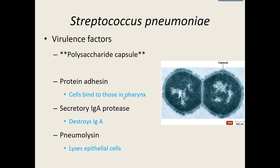Its biggest virulence factor is that it has a capsule, and it likes to hang out in pairs. A couple other virulence factors: it has an adhesion protein that allows it to stick to the epithelial cells in our pharynx. It also makes its own enzyme called secretory IgA protease that breaks down our immunoglobulin A antibodies — so when our immune system tries to attack it, this bacteria produces an enzyme that attacks our antibodies. And it makes an enzyme called pneumolysin that lyses epithelial cells, allowing entry into the body.